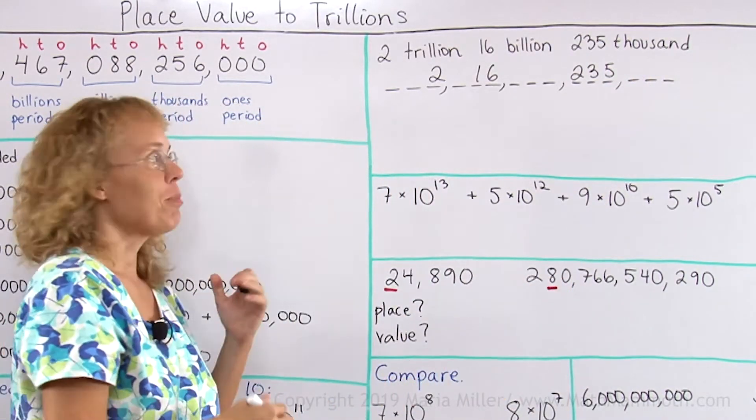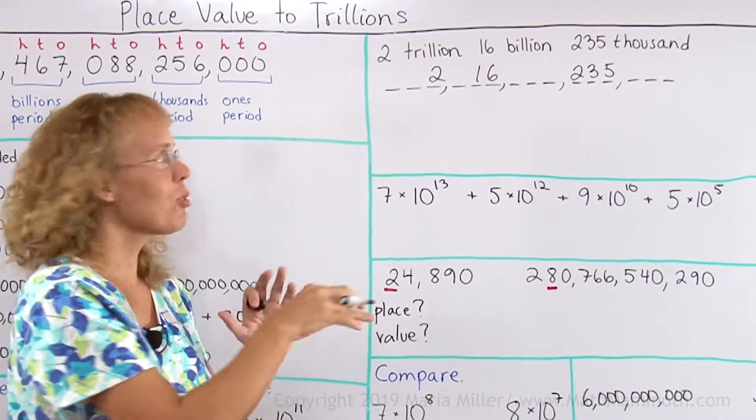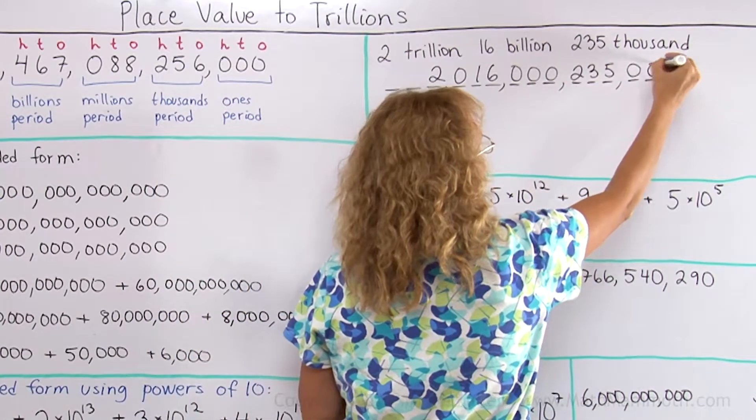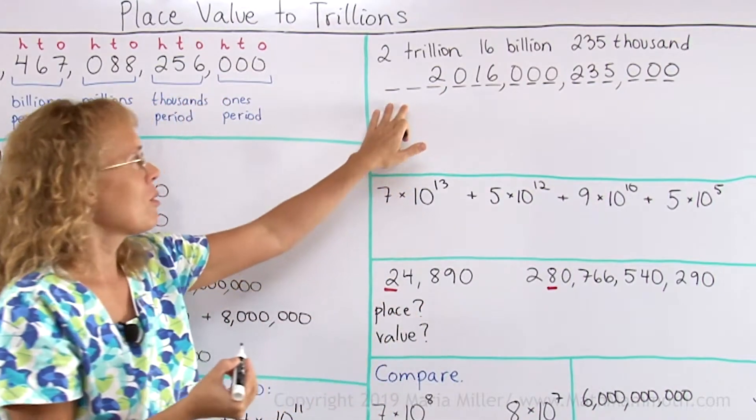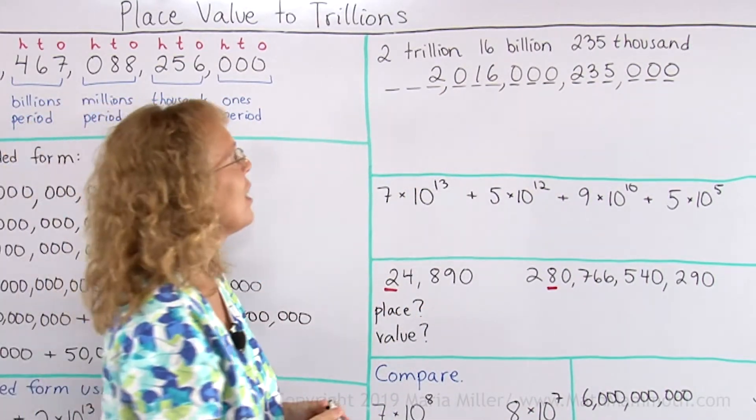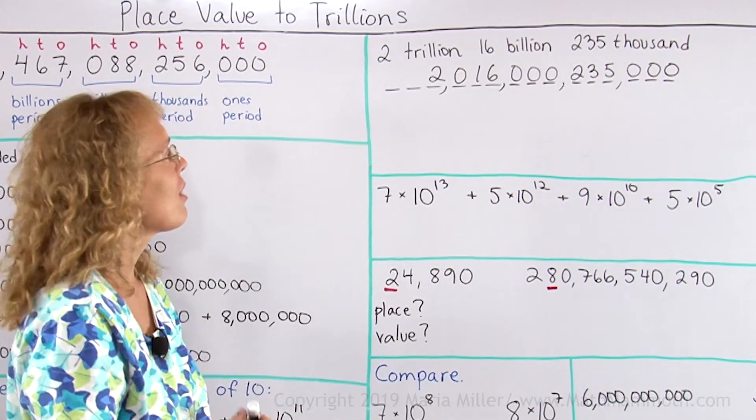That helps you keep track of the whole number. Then fill those empty things with zeros over here, and here, and here. And we don't normally write zeros in front of the number, as you know. It wouldn't be wrong, it wouldn't change its value.